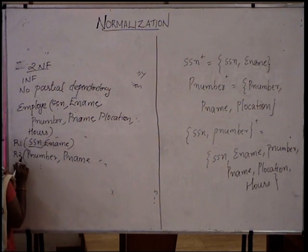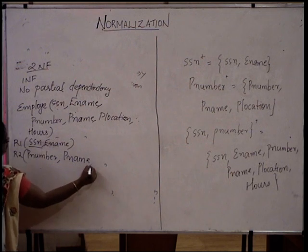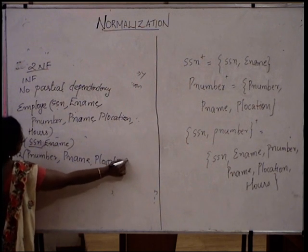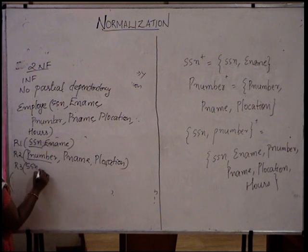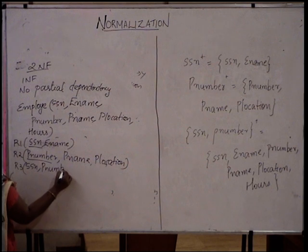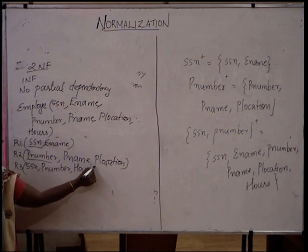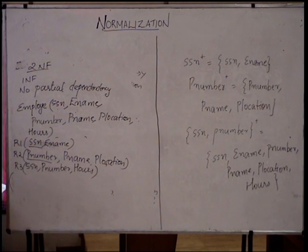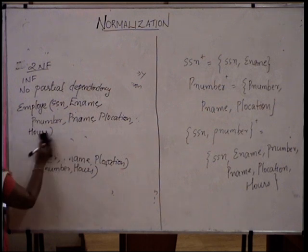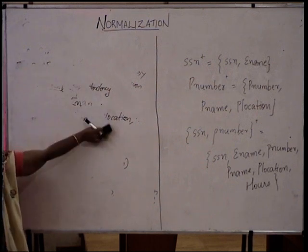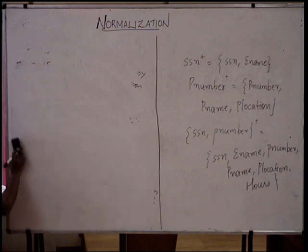Add another table R2 having P number, P name, P location, and the key attribute is P number. The last table is R3 that has SSN, P number, and hours. So when we split the original table into three relations, the employee table will become in second normal form.